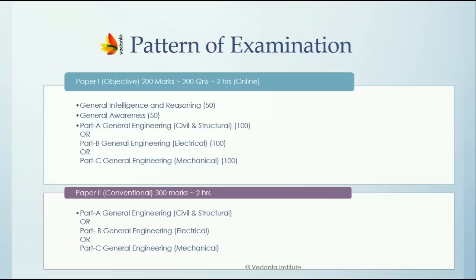The first section is General Intelligence and Reasoning, coming for 50 marks. The next is the General Awareness section, also for 50 marks. The third section is a technical section coming for 100 marks — for you, this will be the Mechanical Engineering section.